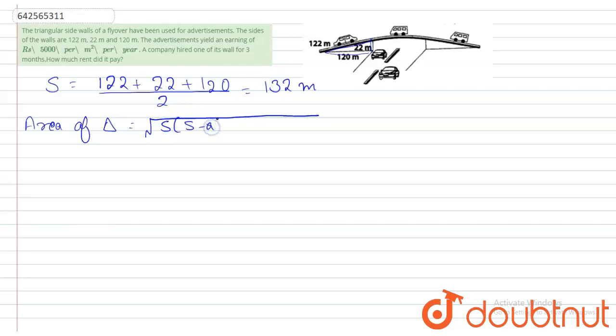square root of s times (s minus a) times (s minus b) times (s minus c). You have to put the values of a, b, and c here, also of s. So